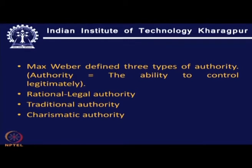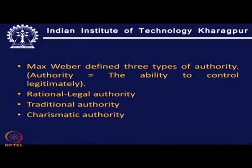Max Weber defined three types of authority — the ability to control legitimately. These are: legal authority, traditional authority, and charismatic authority. Charismatic authority derives from one's ways of influencing people, ways of talking, behaving, and communicating, which commands respect from others and thereby confers authority.